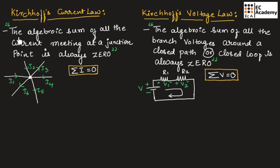Kirchhoff's Current Law states that the algebraic sum of all the currents meeting at a junction point is always equal to 0. So, the summation of currents meeting at a junction will be equal to 0.